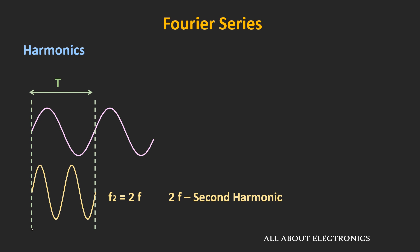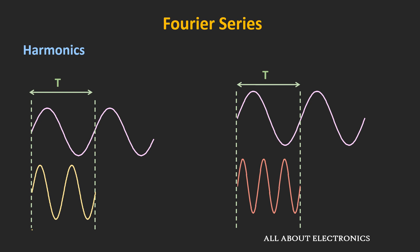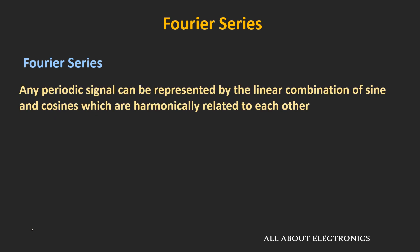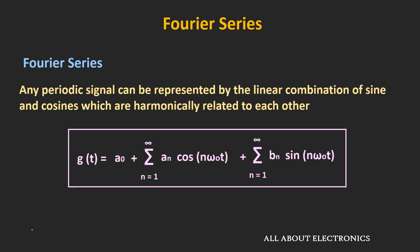In the same time period, if another sinusoidal signal repeats itself three times, then its frequency is equal to 3f. Using the Fourier series representation, any periodic signal which has a time period T can be represented by the linear combination of sine and cosine waves. Here, ω₀ is equal to 2π divided by T. When n is equal to 1, the frequency of the cosine and sine wave is the same as the fundamental frequency. As the value of n increases, the cosine and sine wave represents the harmonic frequencies. This particular Fourier series representation is known as the trigonometric Fourier series.